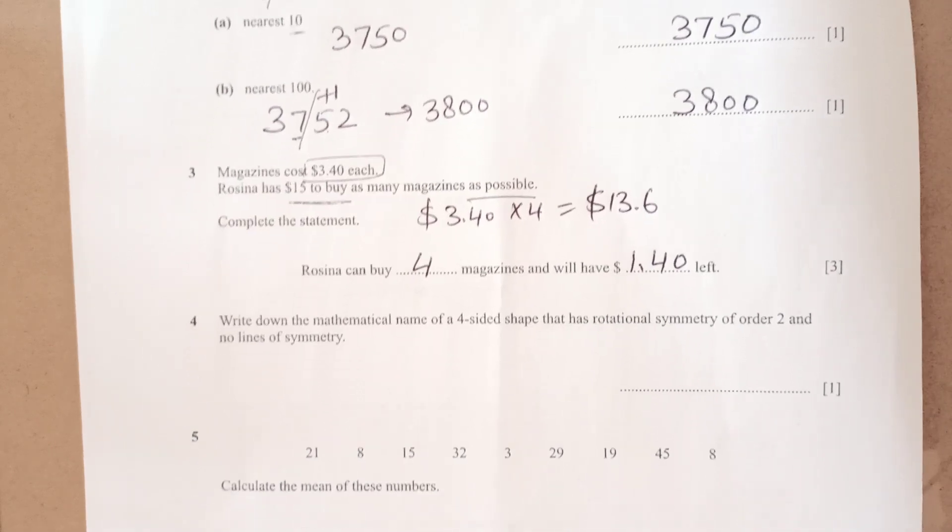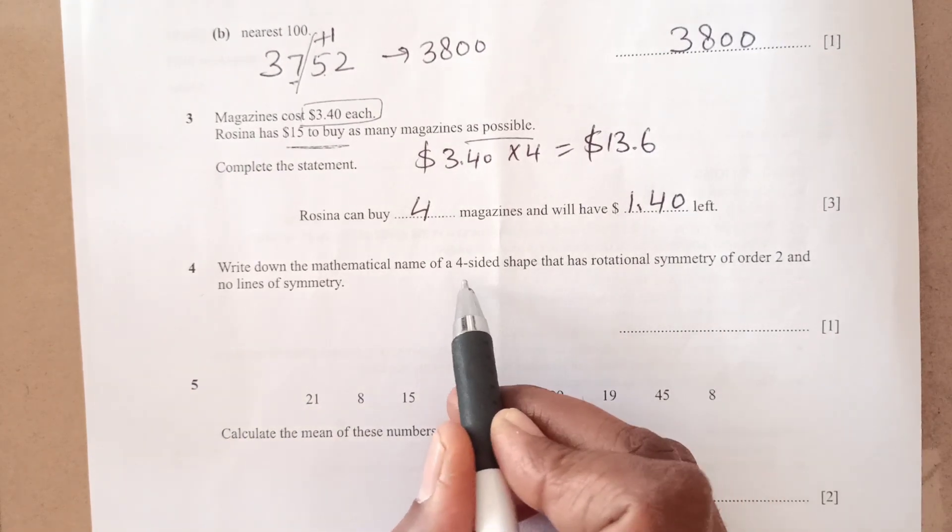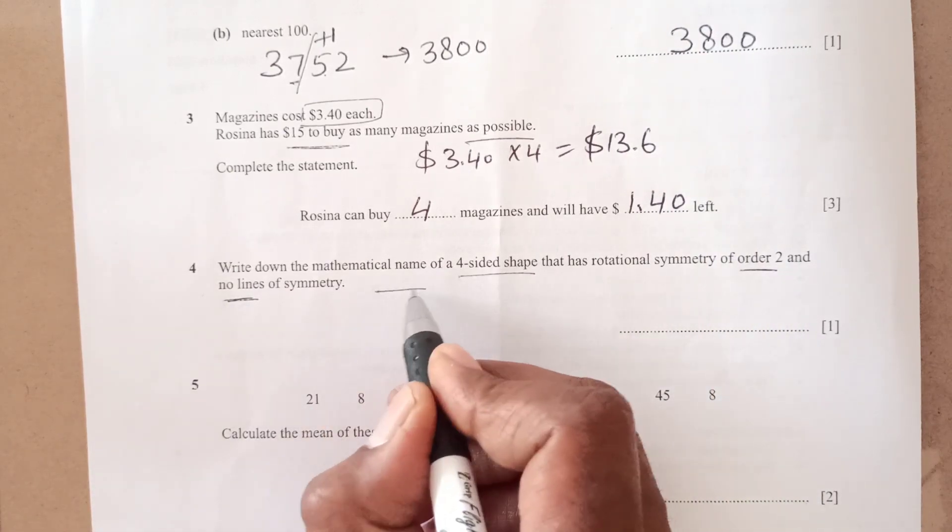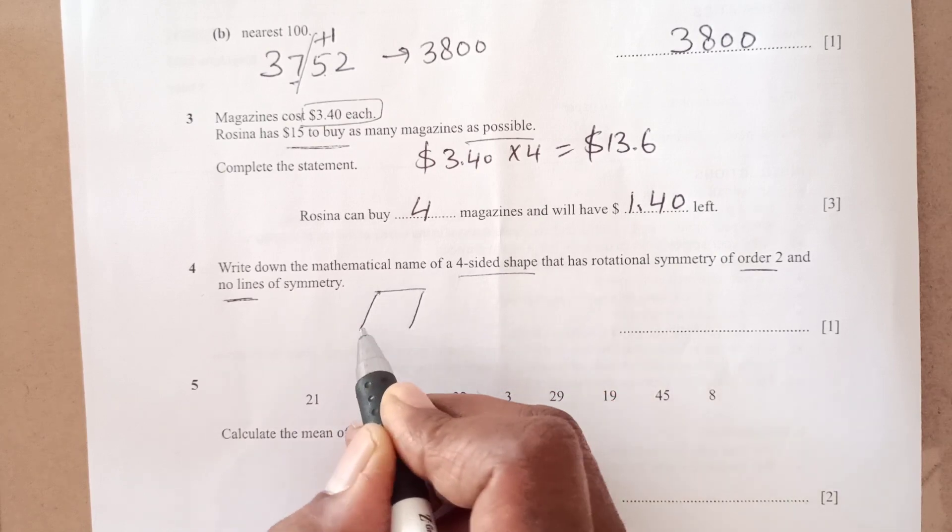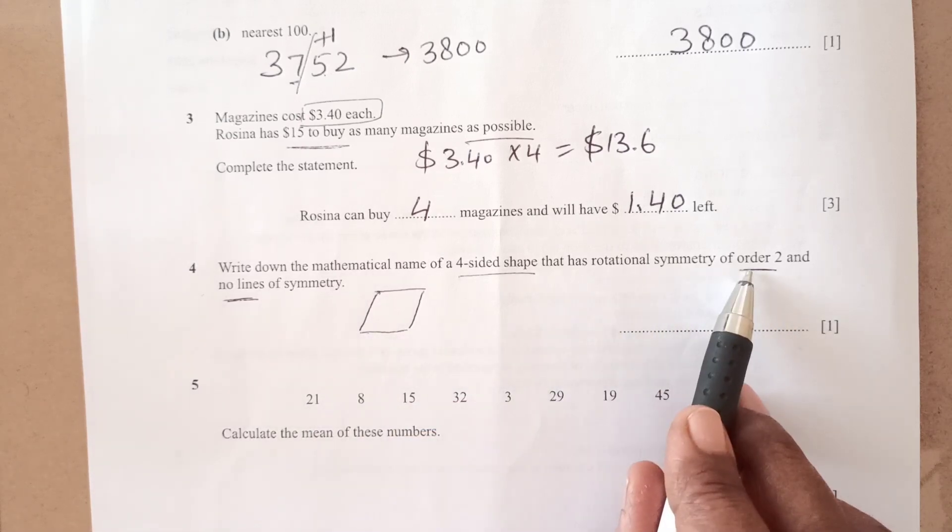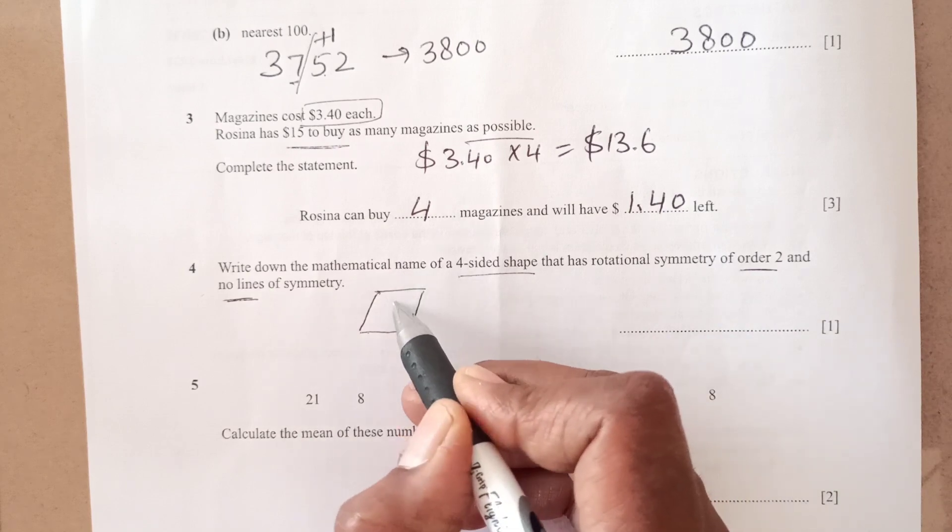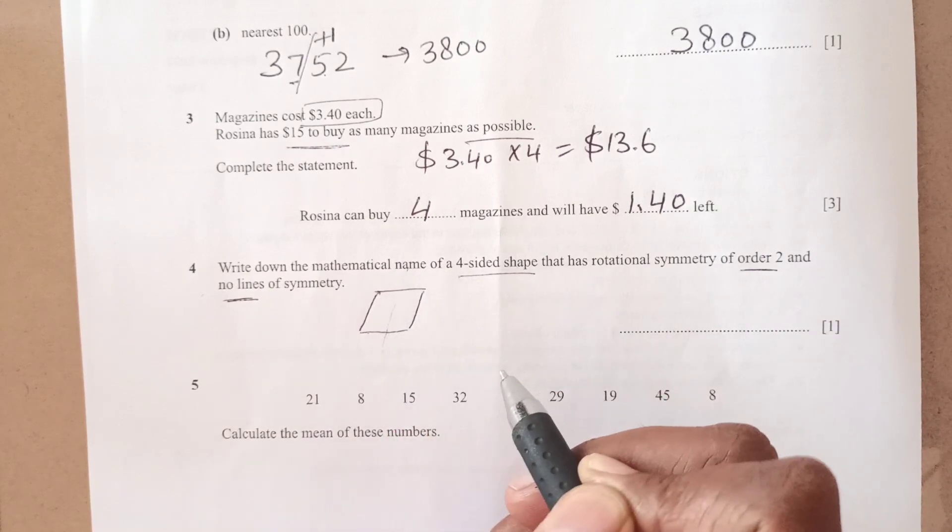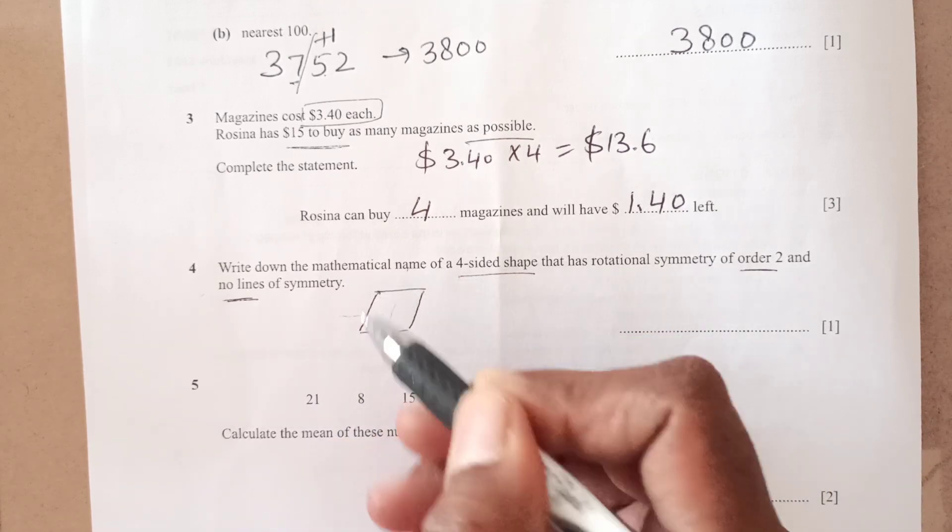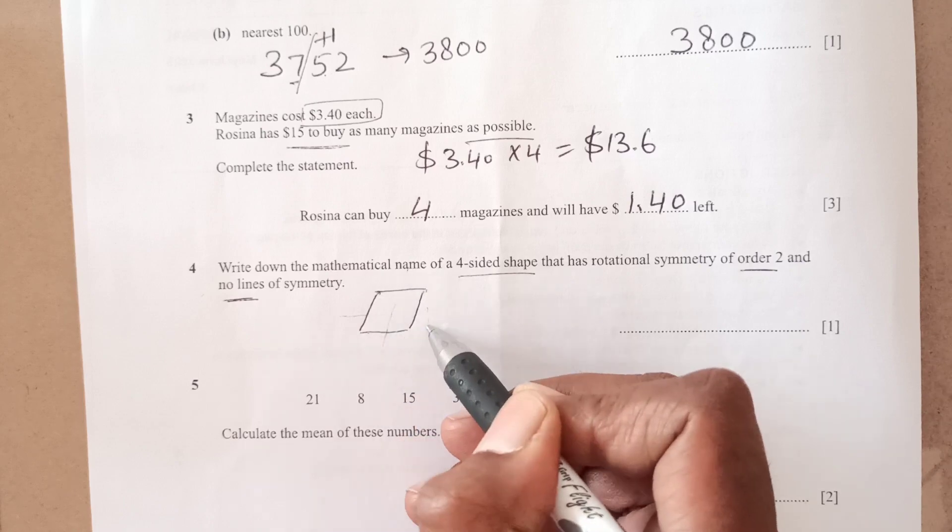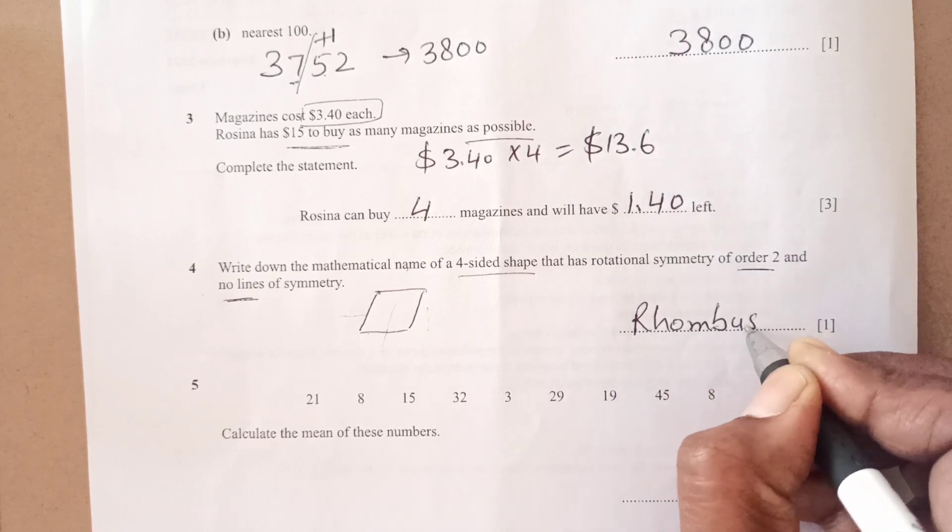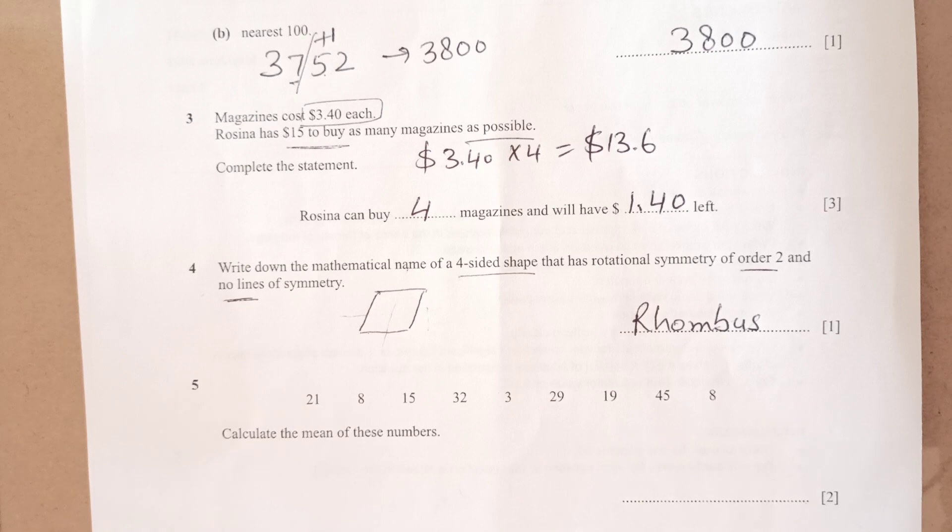Now, number 4, write down the mathematical name of four-sided shape that has rotational symmetry of order 2 and no line of symmetry. This can be easily sorted out like parallelogram cannot have that but the rhombus. Rhombus can have two line order of, it is no line of symmetry. If you draw a line here, it is going to be different and this also when you fold this, this is going to come here, this corner and this corner going to come outside. So the shape that we can have is rhombus. You need to learn properties of the quadrilaterals for that.